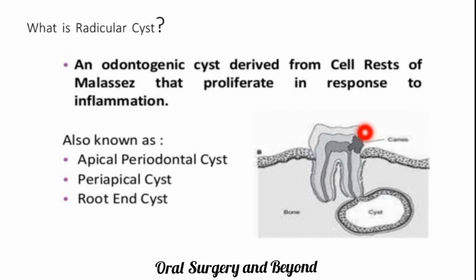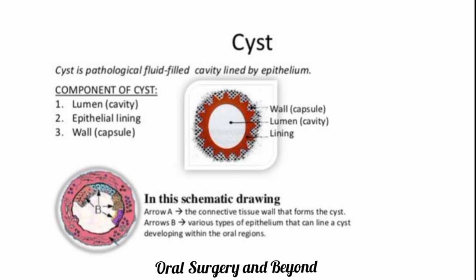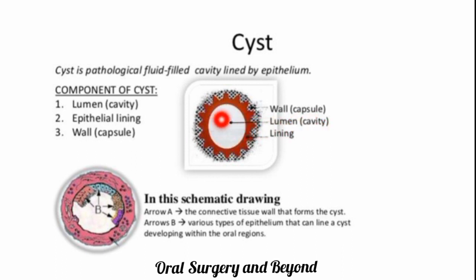It is the most common pathology seen in the oral cavity after oral carcinomas. A cyst is any pathologic cavity filled with fluid or gases and lined by epithelium. The components of a cyst include the lumen — the cavity where cystic fluid or infectious pus accumulates — the epithelial lining, and the wall or capsule of the cyst.